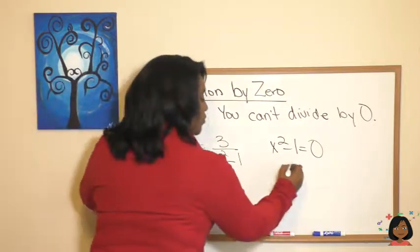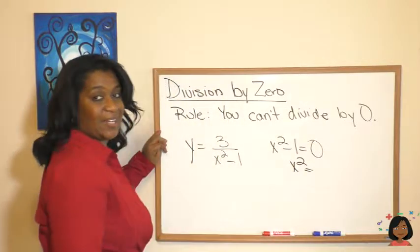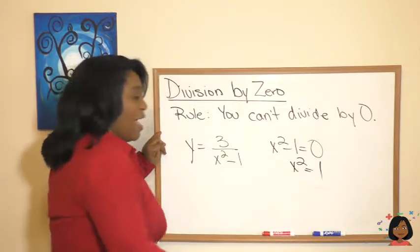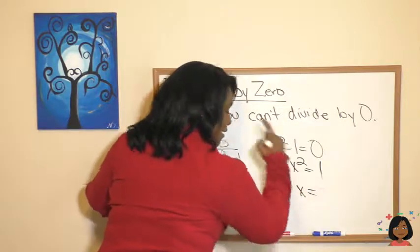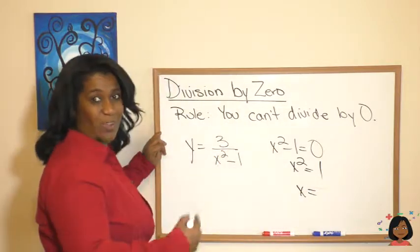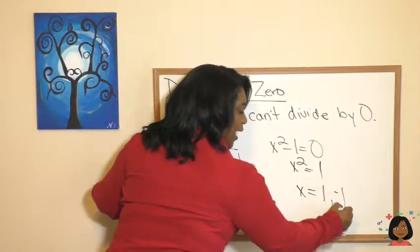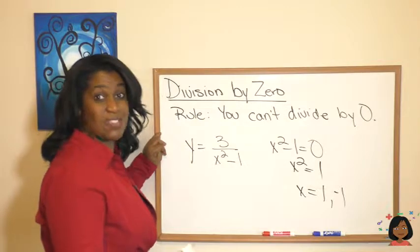So x squared equals—to get rid of the negative one, we're going to add one to both sides, so we get a one. And then we know x is what times what is one? Well, we know we could use a one. It also could be negative one, because negative one times negative one is a positive one.